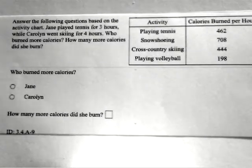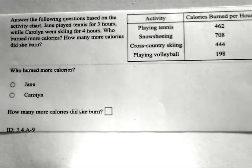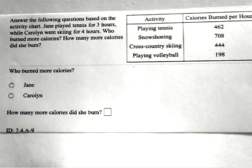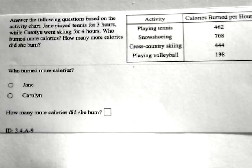Let's look at the next problem. Here we're going to answer the following questions based on the activity chart. In this case here, Jane played tennis for 3 hours. While Carolyn went skiing for 4 hours, who burned more calories? How many more calories did she burn?